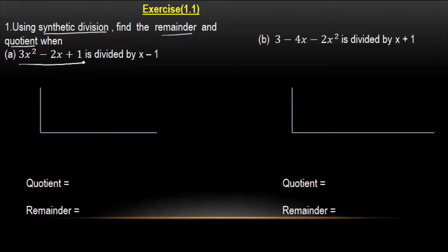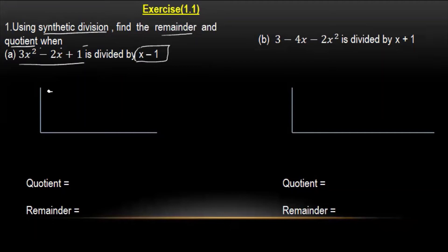If we add this, the value is divided by 2x minus 1. If we add this value, we will add x squared to 3. x is equal to minus 2 and constant is equal to 1. So this is equal to x minus 1, so minus 1, so plus 1 is equal to 1.